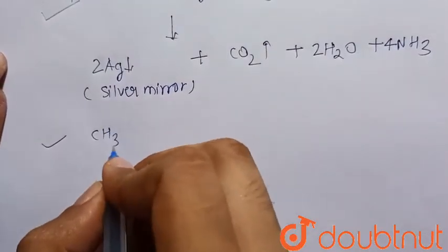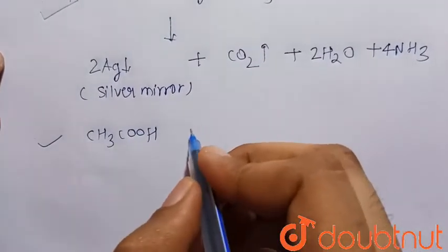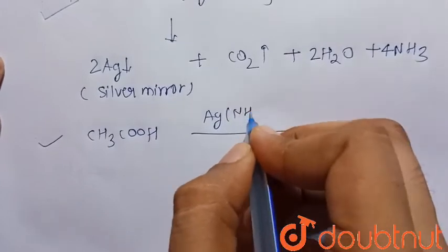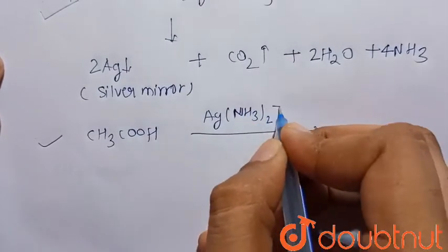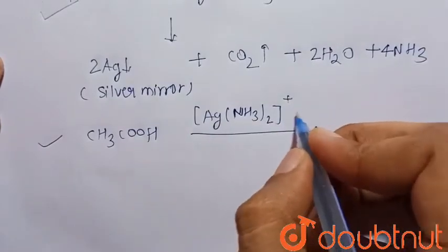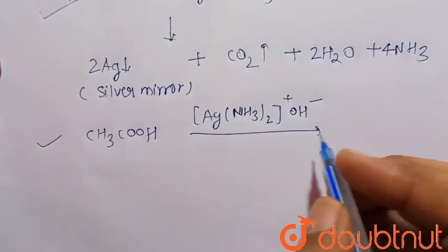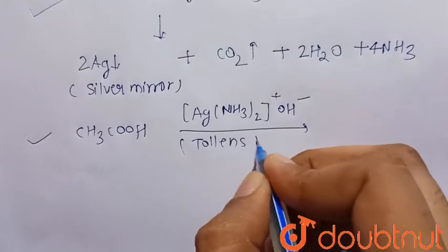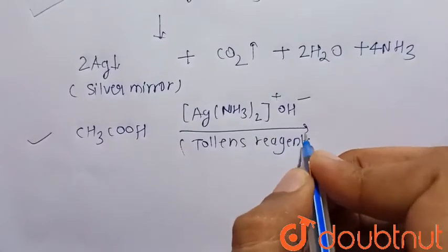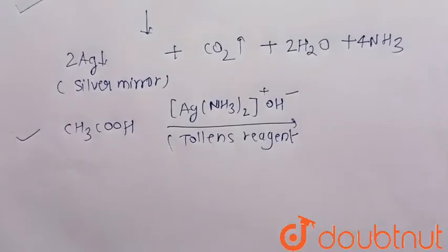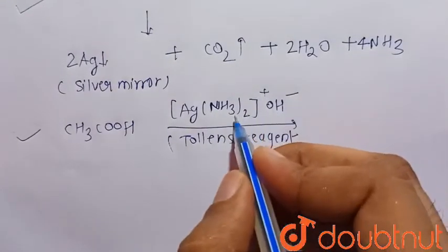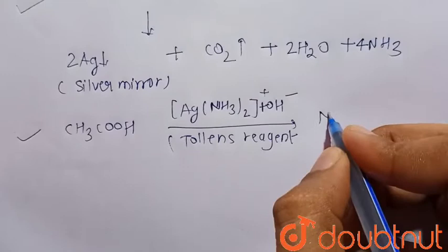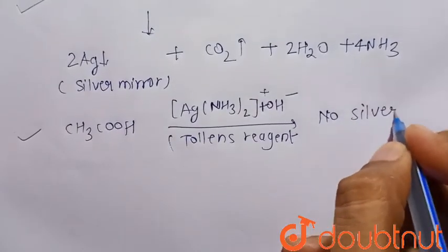Now consider acetic acid, that is CH₃COOH. It does not give a positive Tollens' test. When it reacts with Tollens' reagent — [Ag(NH₃)₂]⁺ in the presence of base (OH⁻) — no silver mirror is formed.